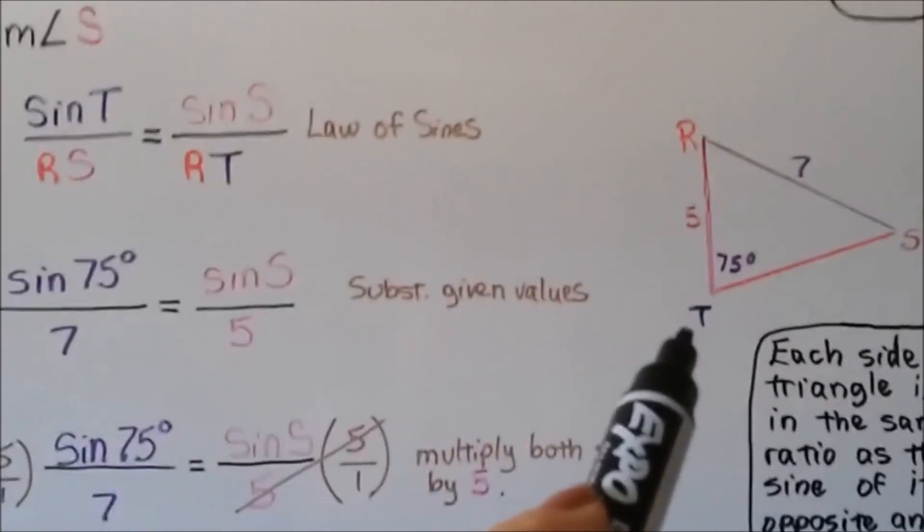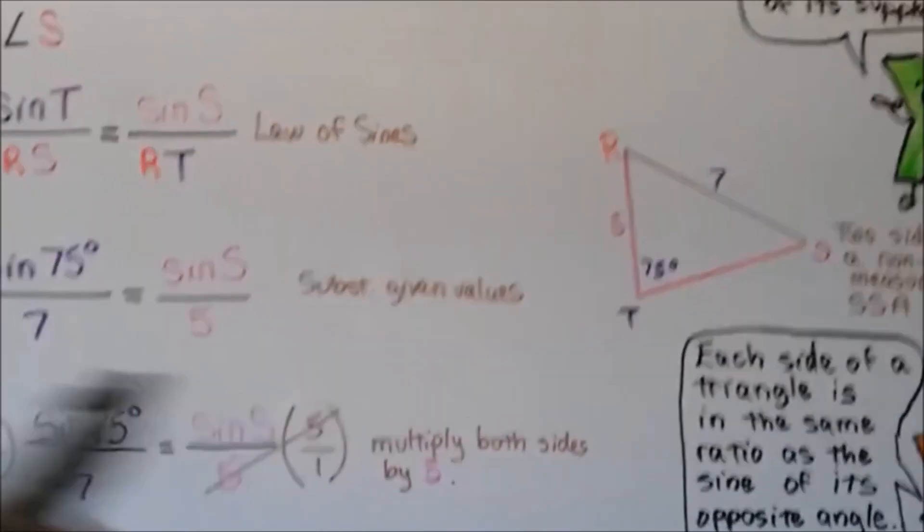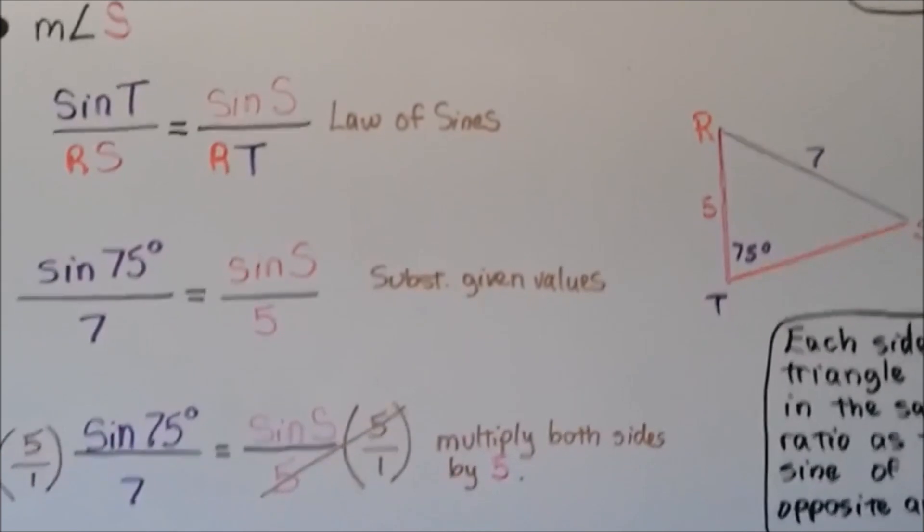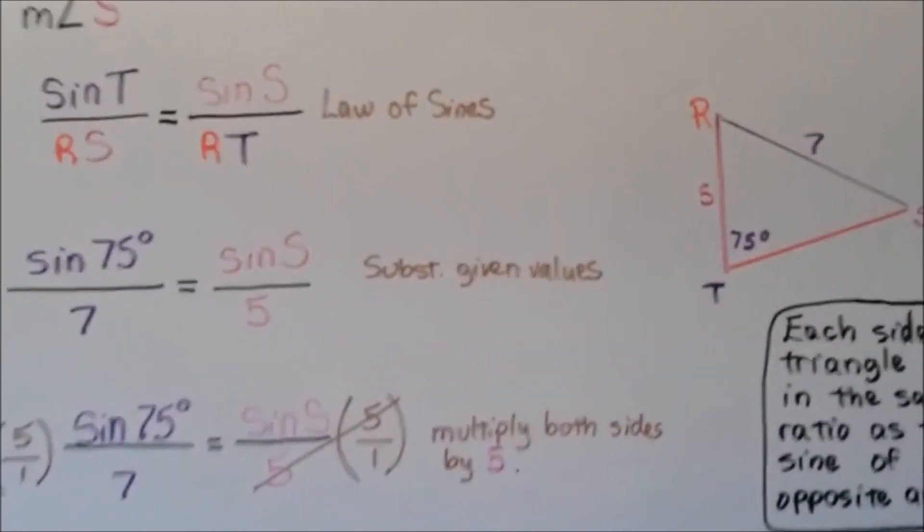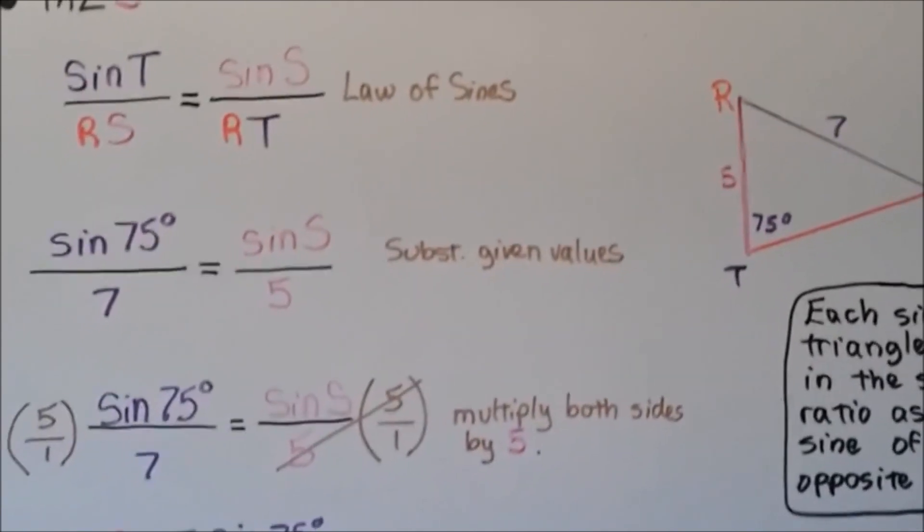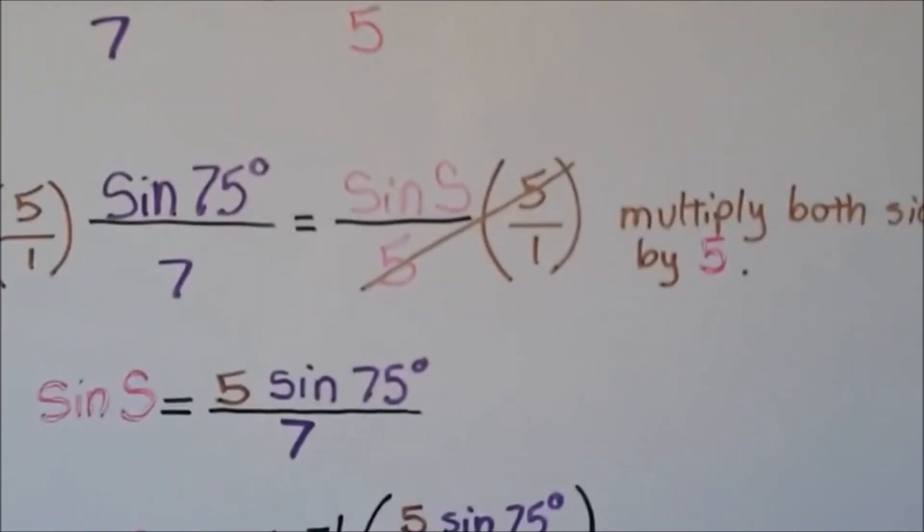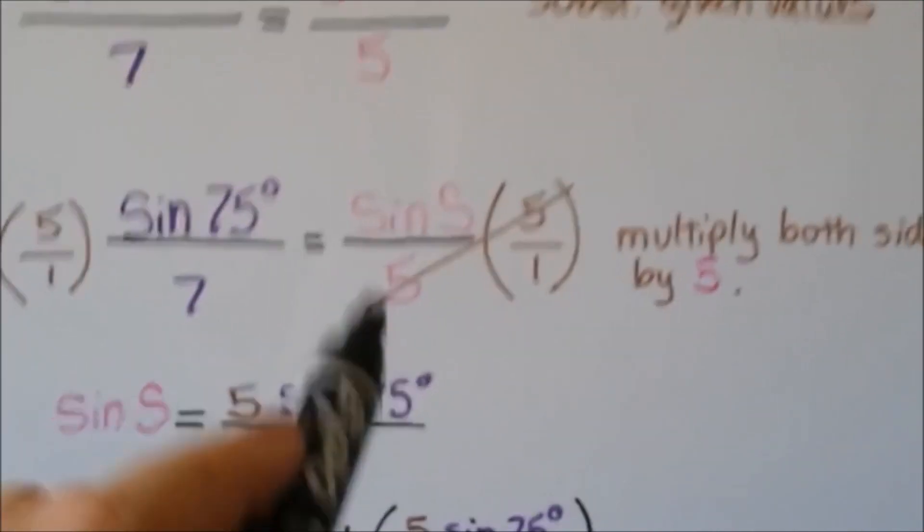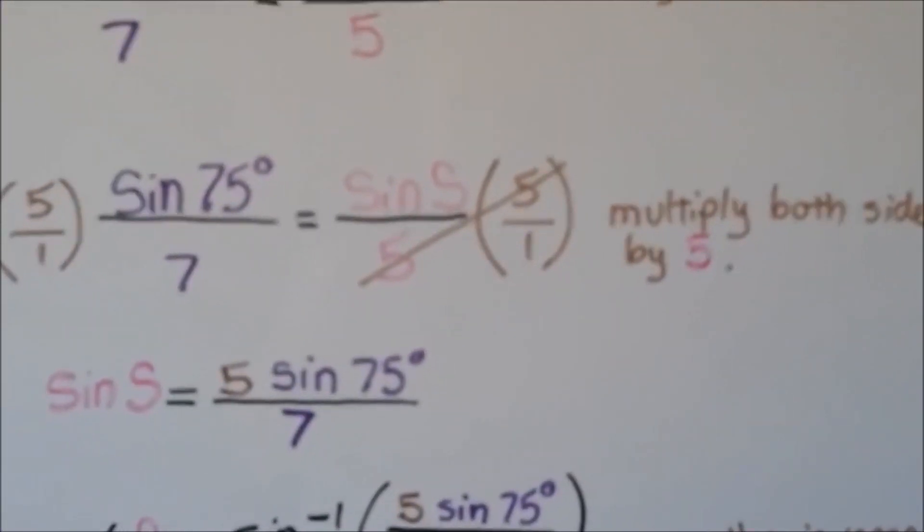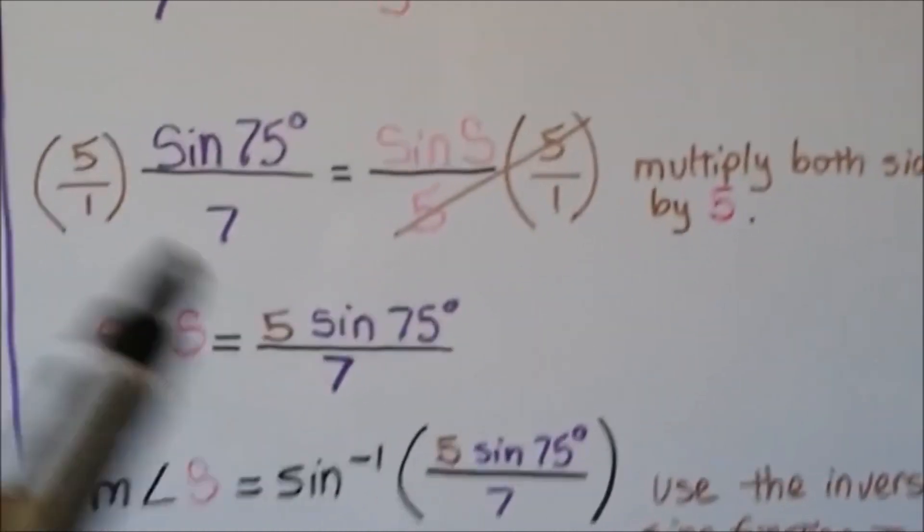To find the measure of angle S, we do the sine of T over RS equals the sine of S over RT. That's the law of sines. We substitute in the given values, we get the sine of 75 degrees over seven equals the sine of S over five. We can multiply both sides by five. This five would cancel out this five. We're left with the sine of S, and we can put it on the left side. On this side, we've got five sine of 75 over seven.